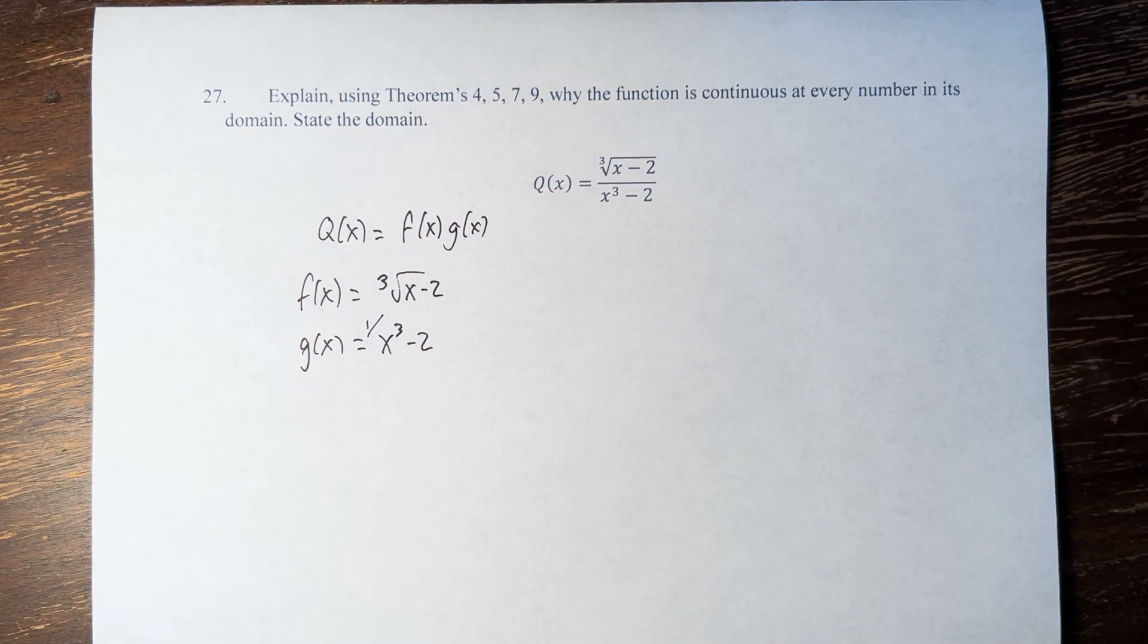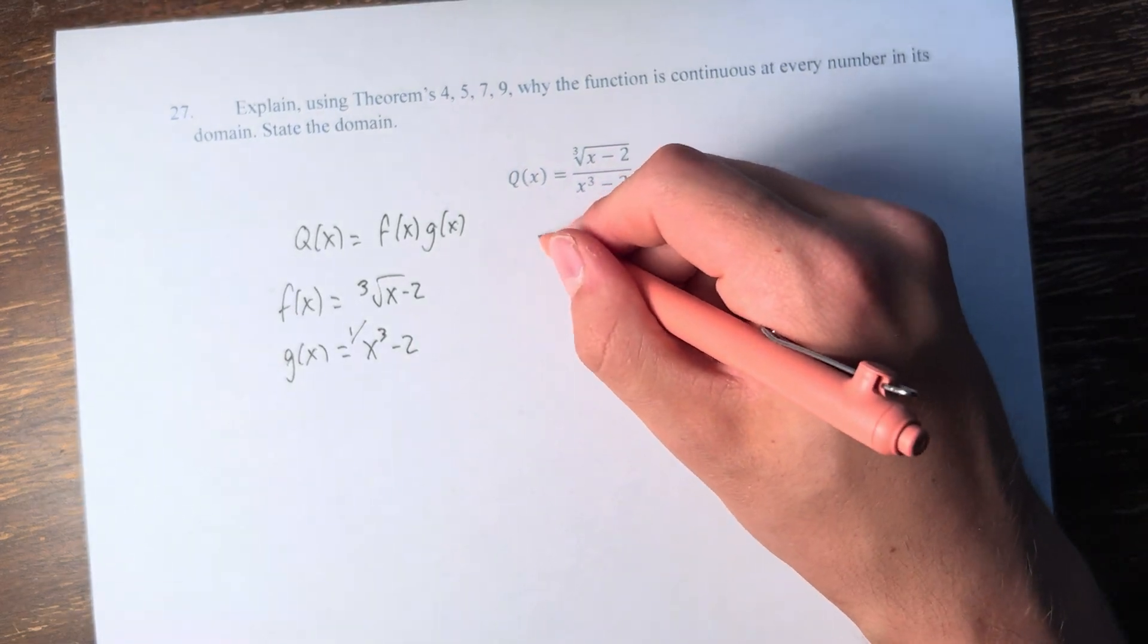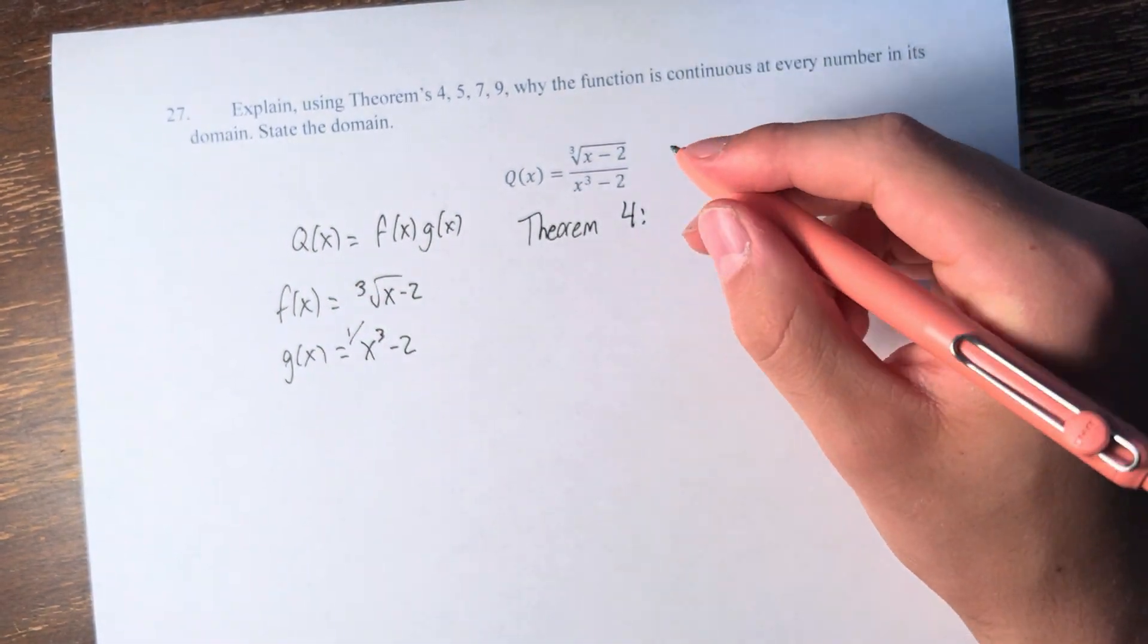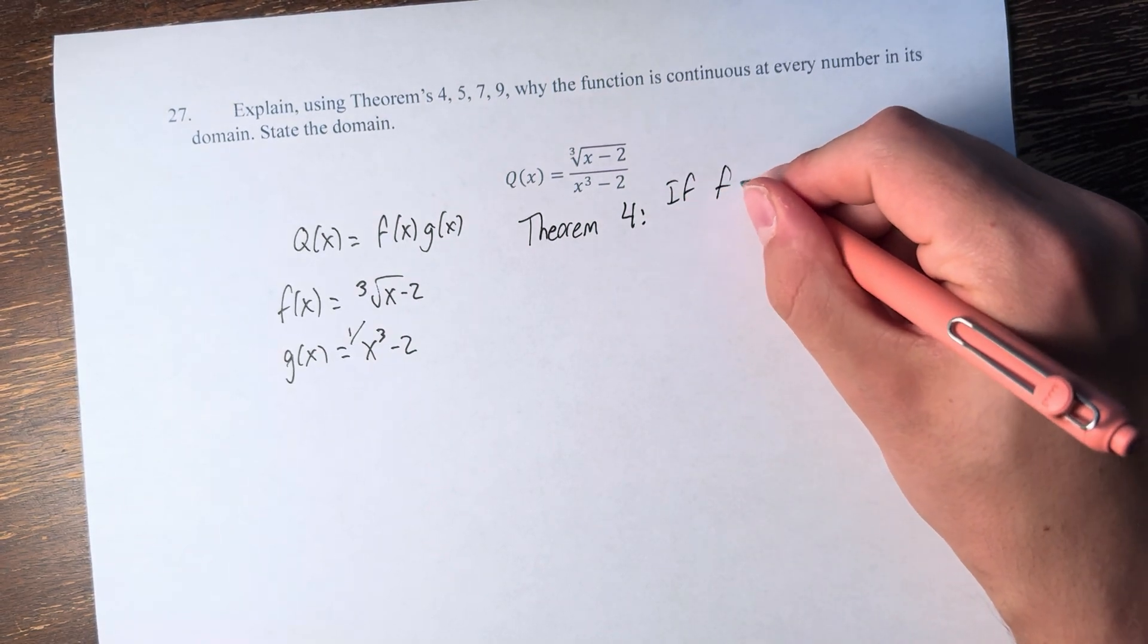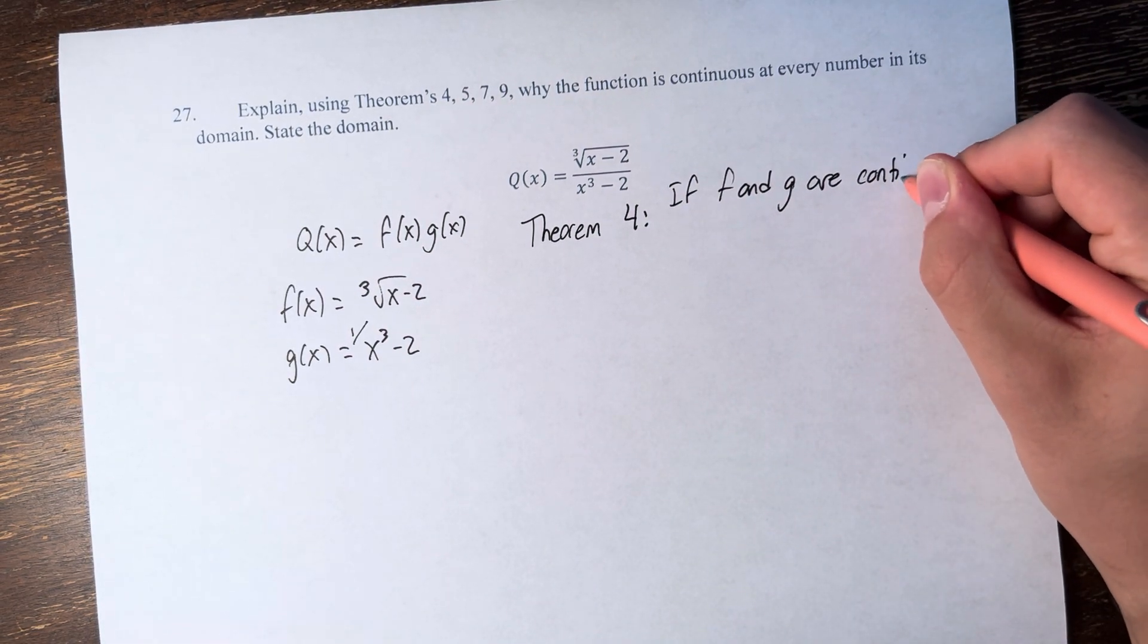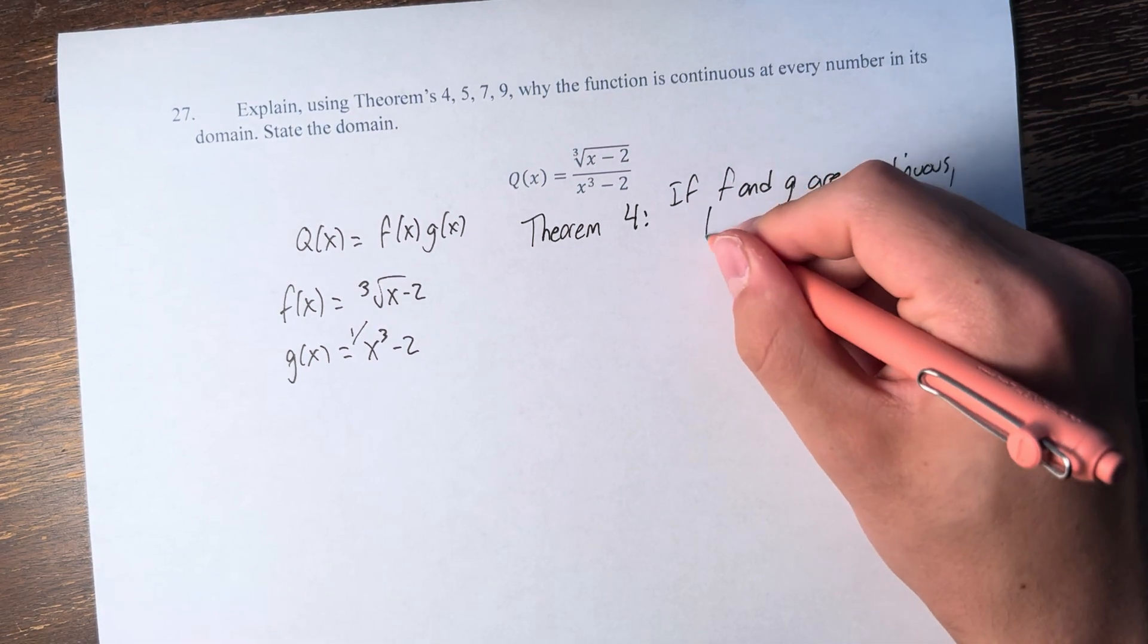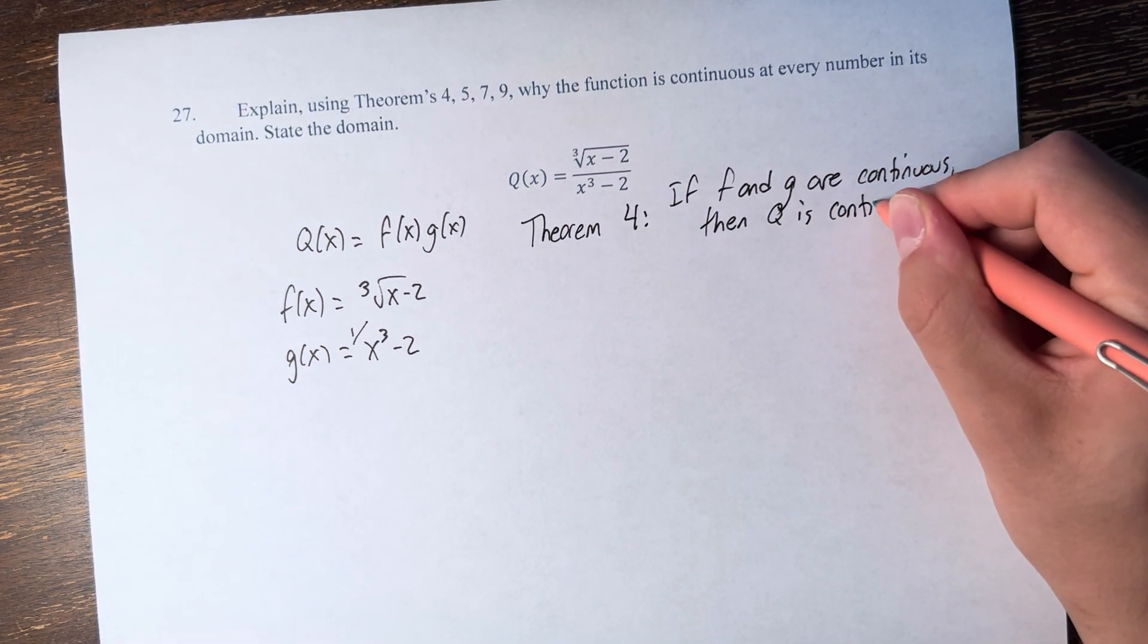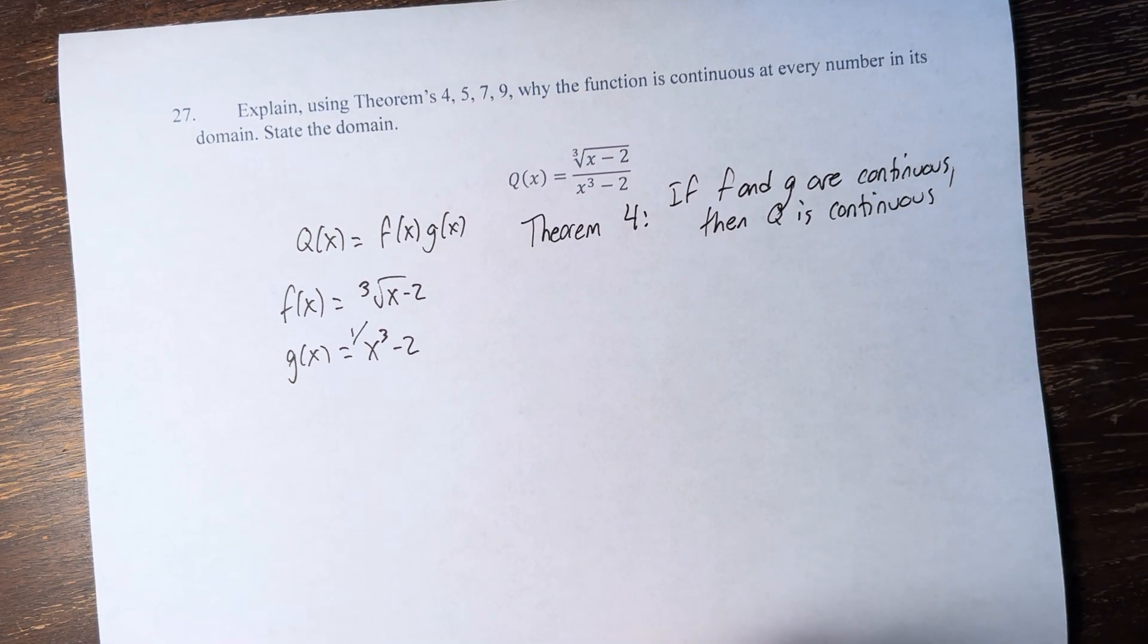And we know from theorem 4 that if f is continuous and g is continuous at a certain point, then q is continuous because q equals f times g.